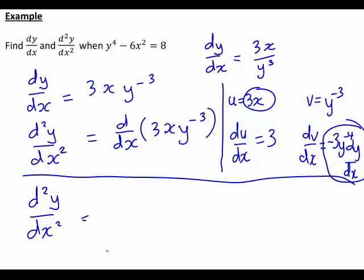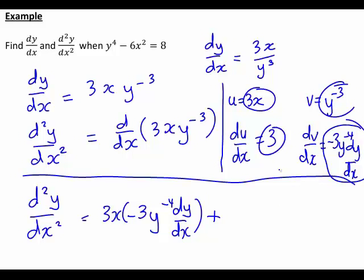So therefore, in this case, the second order derivative of y with respect to x is going to become 3x times that all expression there. So that's going to simplify to be 3x times negative 3y to the negative 4 dy dx. I'll tidy that up a bit more in a minute.